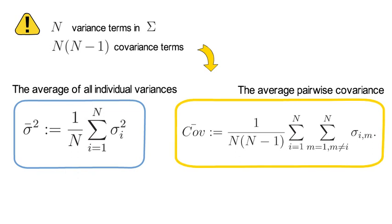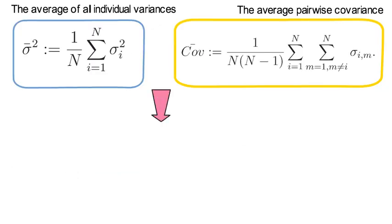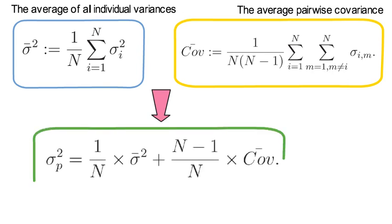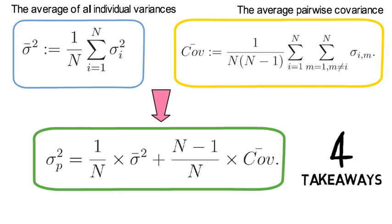Now that allows us to re-express the variance of the holding period return of the equal weight portfolio as the following expression here. Now that last expression allows us to extract four takeaways about the power and the causes of diversification.